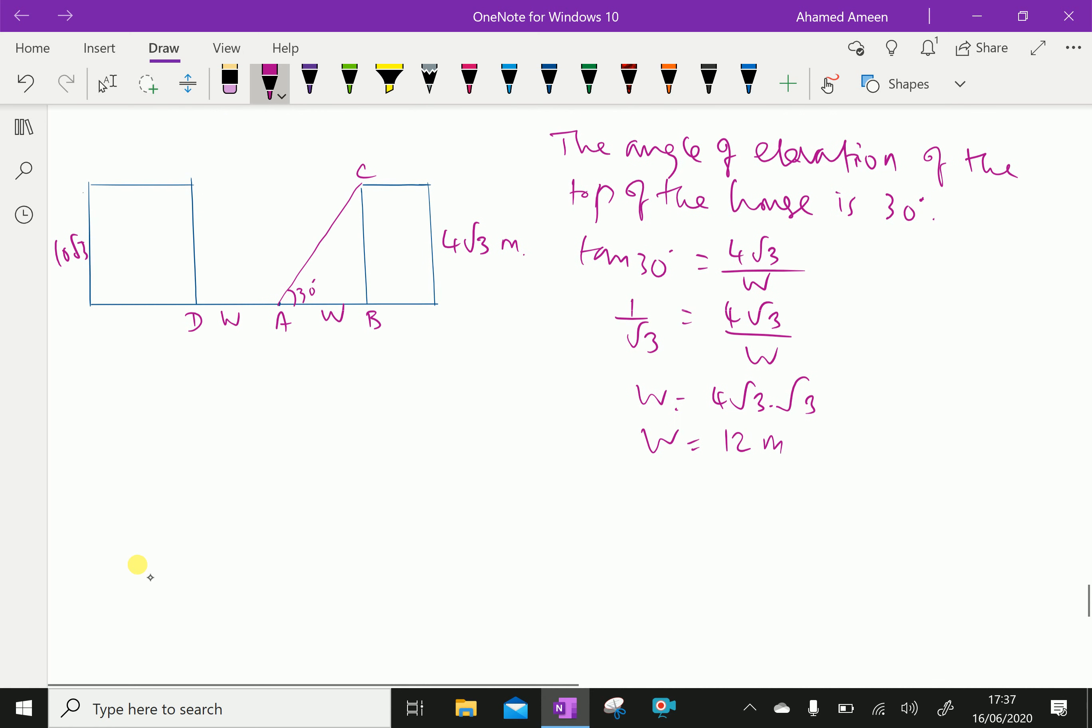But road width, road width is 2W because a person standing at median of the road, so middle of the road, so road width BD is 2W which is equal 2 into 12 equal 24 meter.